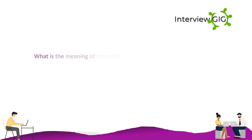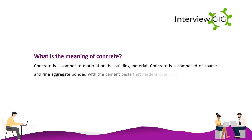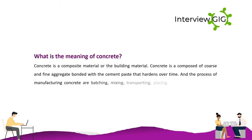What is the meaning of concrete? Concrete is a composite material or building material. It is composed of coarse and fine aggregate bonded with cement paste that hardens over time. The process of manufacturing concrete involves batching, mixing, transporting, placing, compacting, curing and finishing.